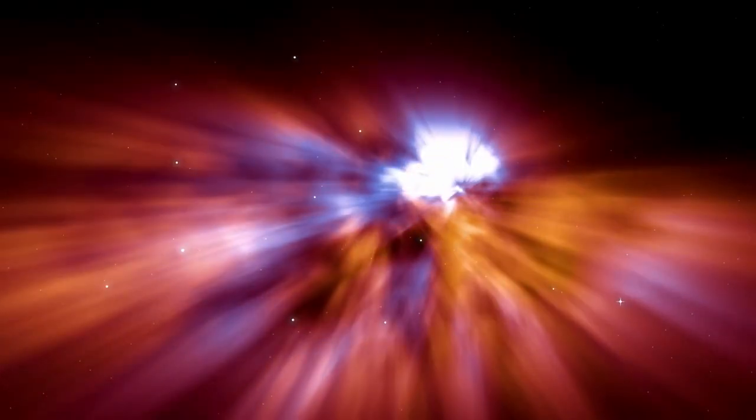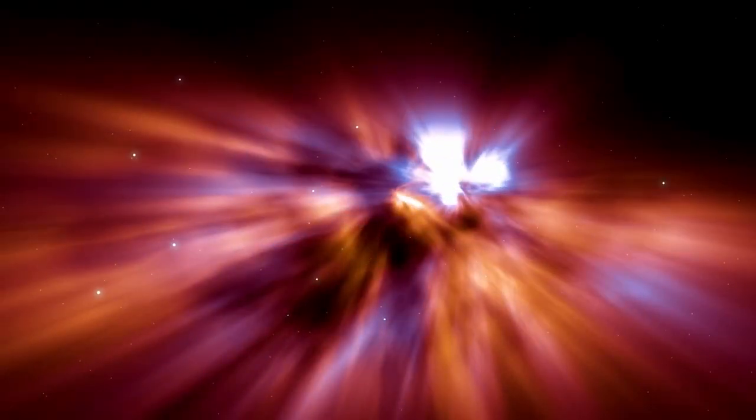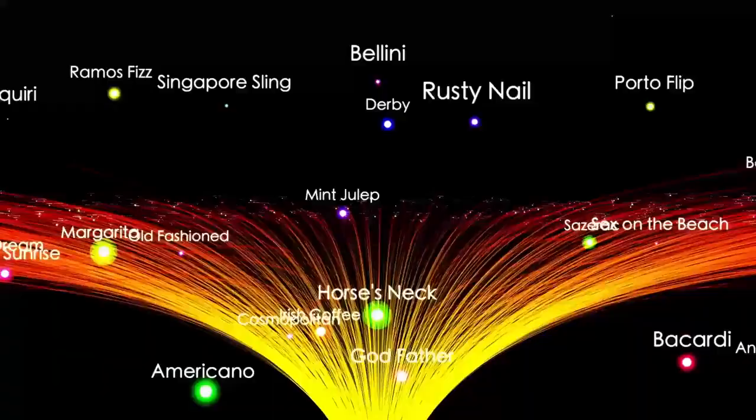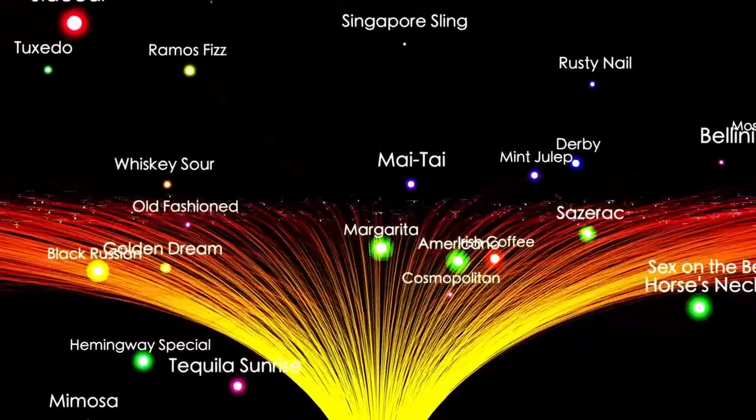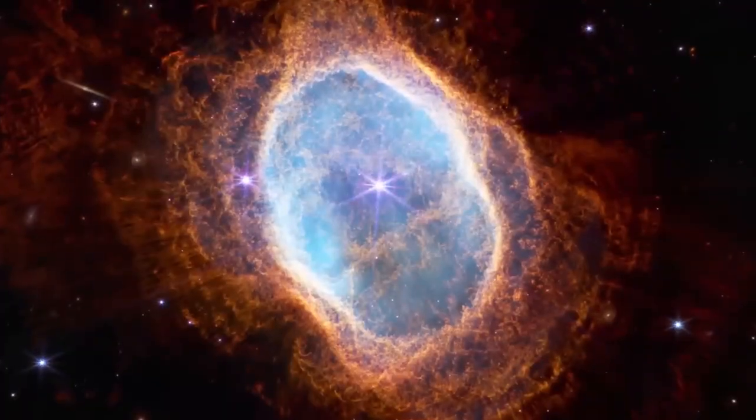After crossing the unimaginable void between stars, 3i-Atlas still carries volatile compounds from its home system. It is, in every sense, a time capsule—a piece of another world drifting into ours.